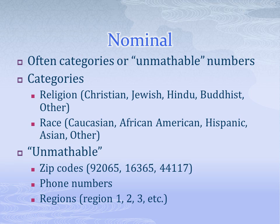Similarly, nominal variables include unmathable numbers such as zip codes, phone numbers, and regions. We would never say that someone living in California with a zip code like 92065 has more or greater zip code value than someone from Ohio with a zip code of 44117. It just wouldn't make sense — it's not meaningful, even though numerically 44117 is less than 92065.